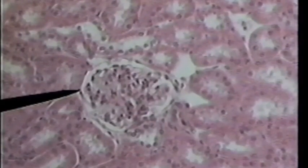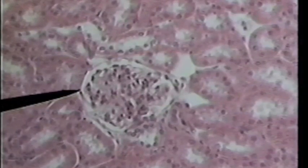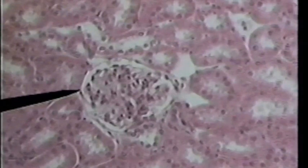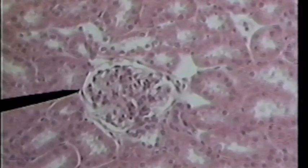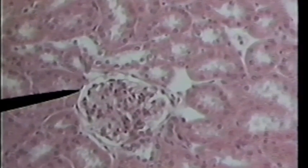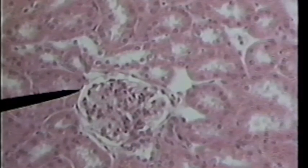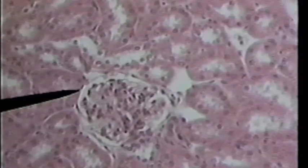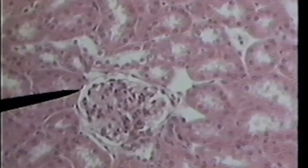The tip of the pointer is just above a black dot. That black dot is the nucleus of a simple squamous cell. Really it is the only hint of the cell there. Now it is pointing to another nucleus from another squamous cell. There is a layer of tissue that lines this crescent.